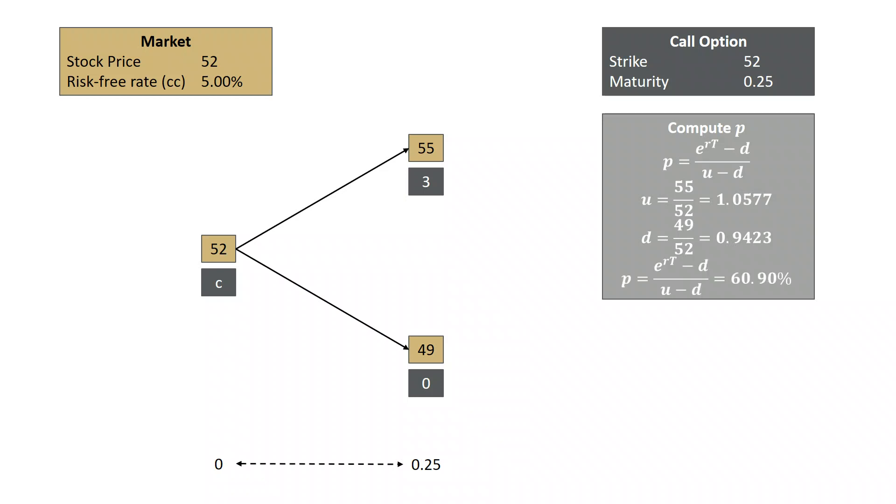We find P is 60.90%. We interpret P in the risk-neutral world as the probability of the stock going from 52 to 55. 1 minus P is the probability of going from 52 down to 49.